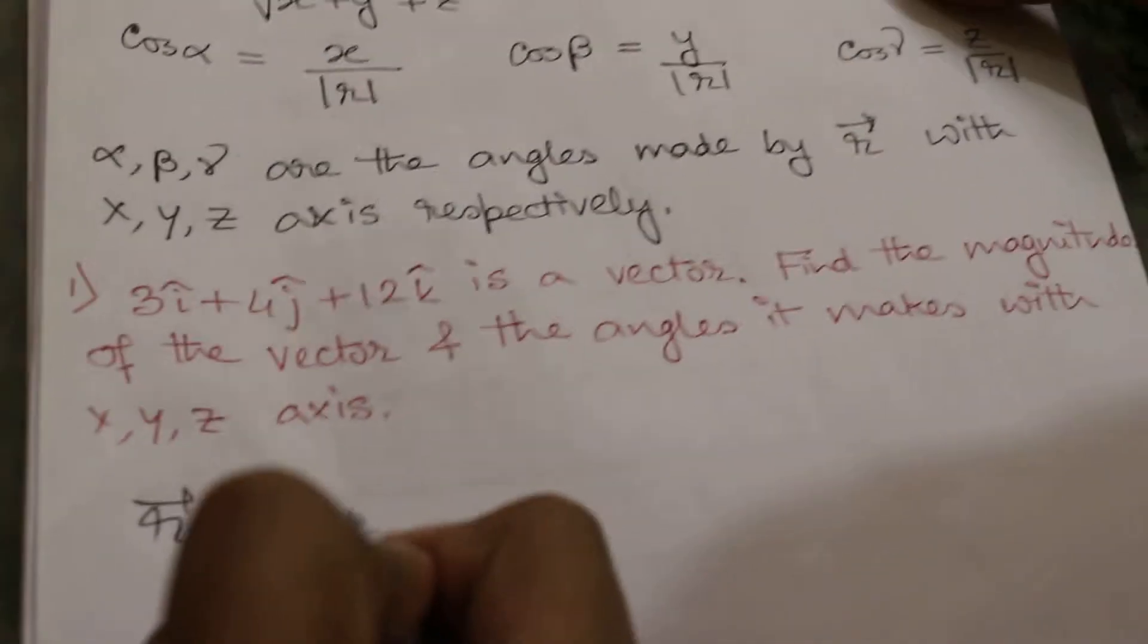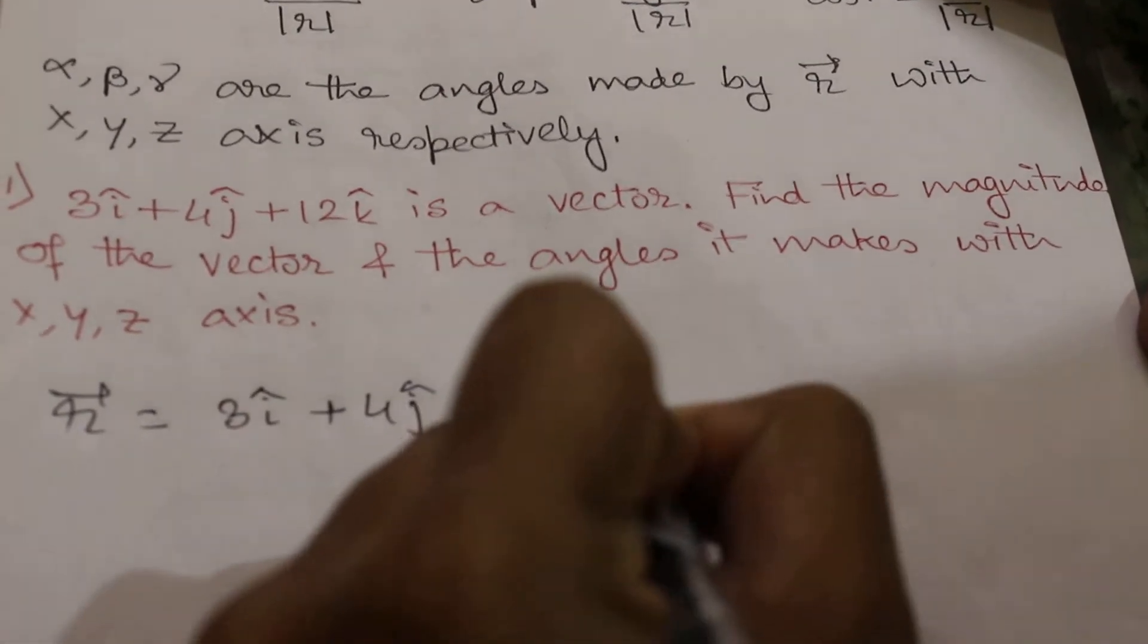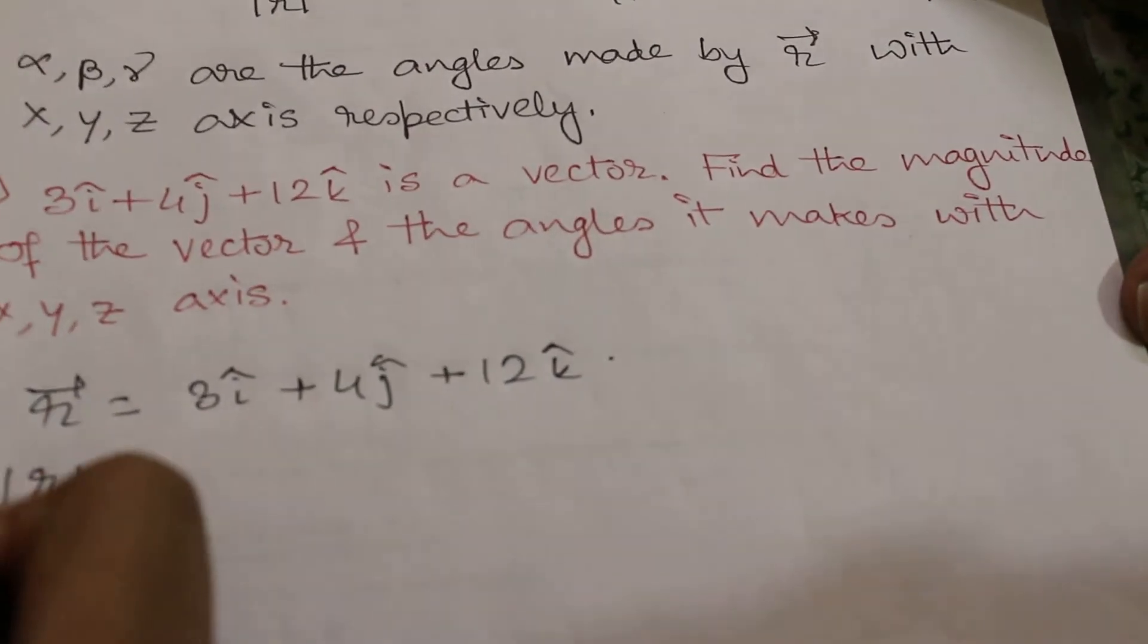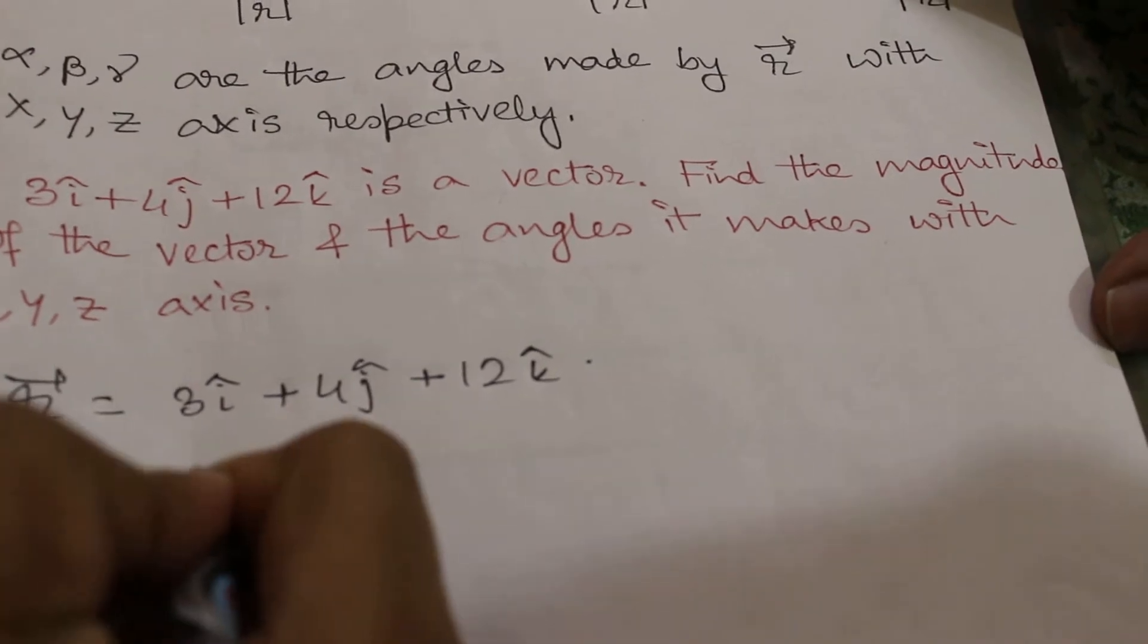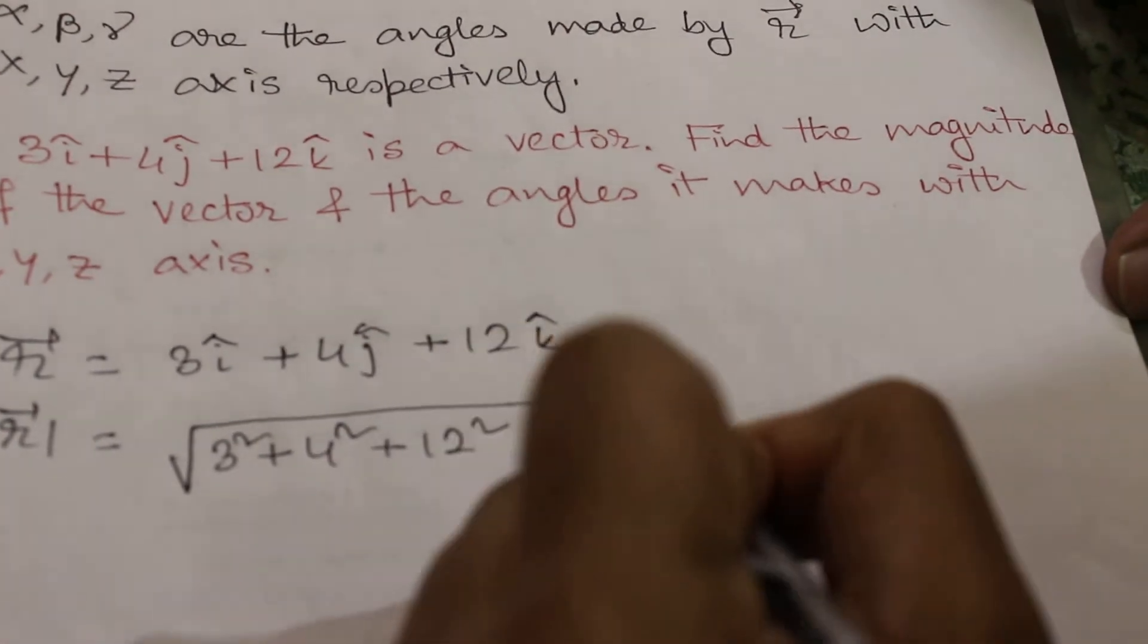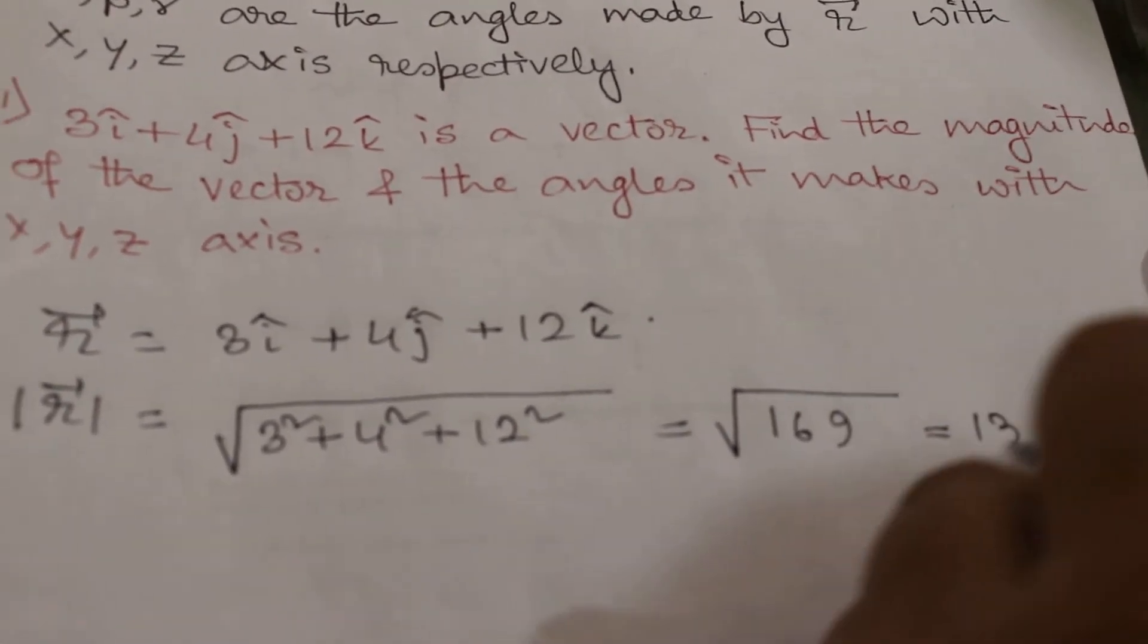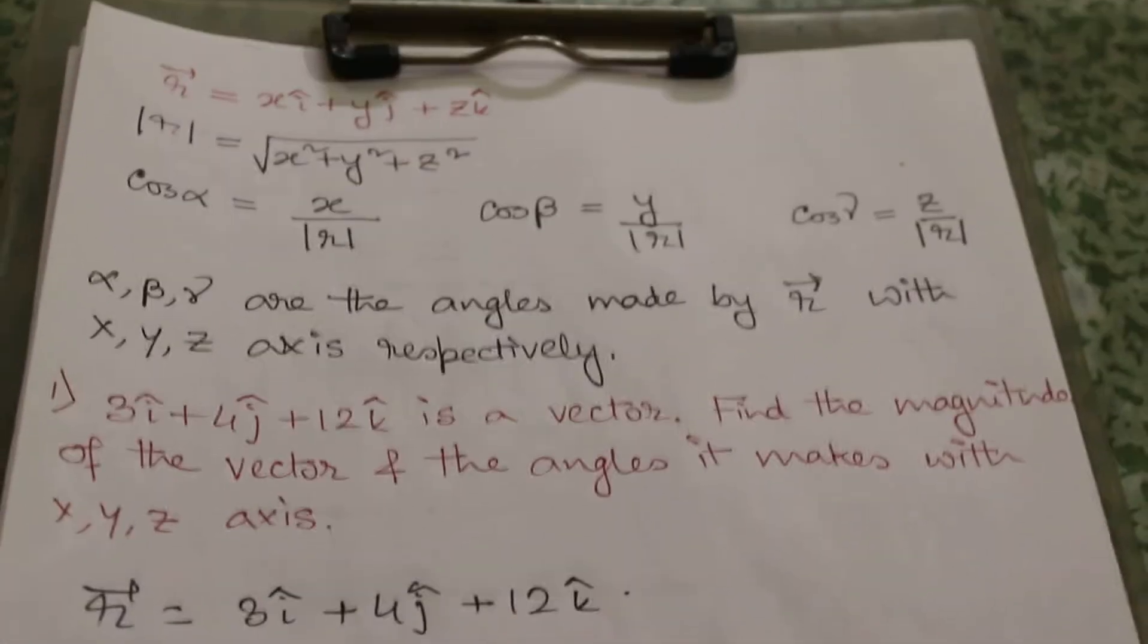So r bar is equal to 3 i cap plus 4 j cap plus 12 k cap. So mod of r will be equal to root of x square plus y square plus z square, which is equal to root over 169, that means 13. So its magnitude is 13.